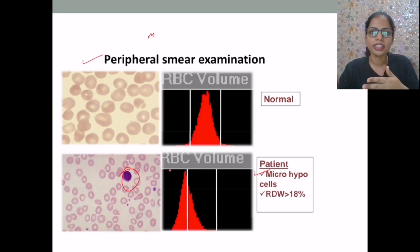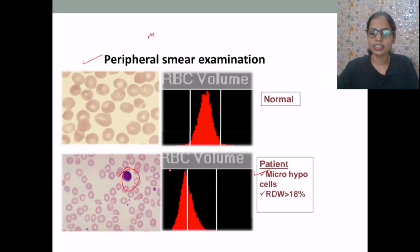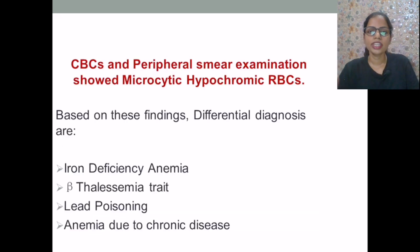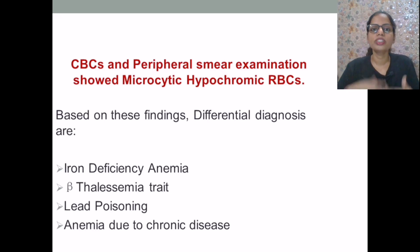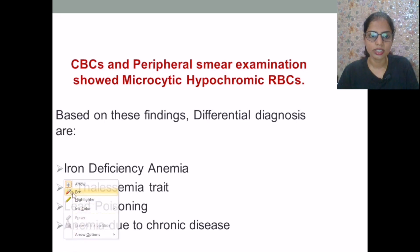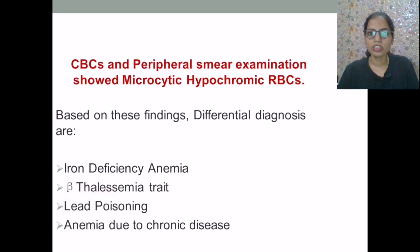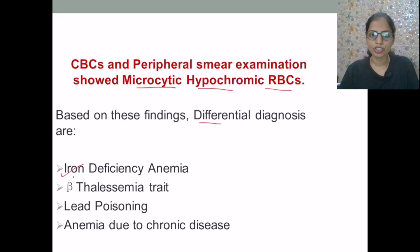Within microcytic hypochromic anemia, the differential diagnoses include iron deficiency anemia, thalassemia, and sideroblastic anemia. CBC and peripheral smear showed microcytic hypochromic RBCs. Based on these findings, the differential diagnosis includes iron deficiency anemia, beta thalassemia trait, lead poisoning, and anemia due to chronic diseases.